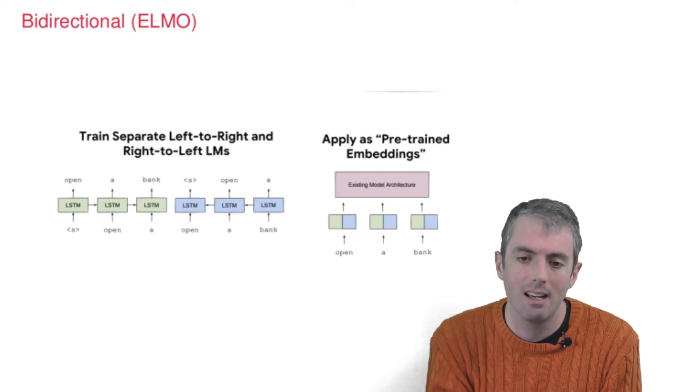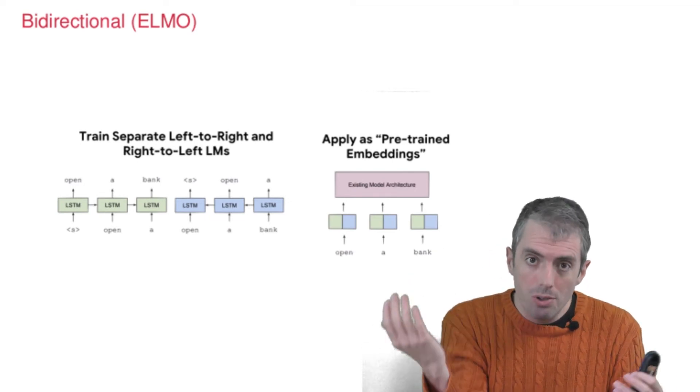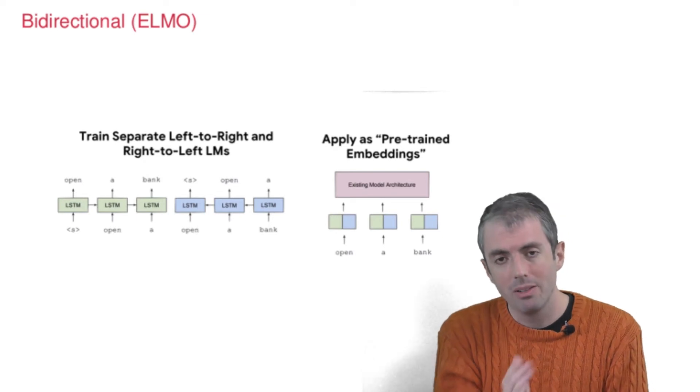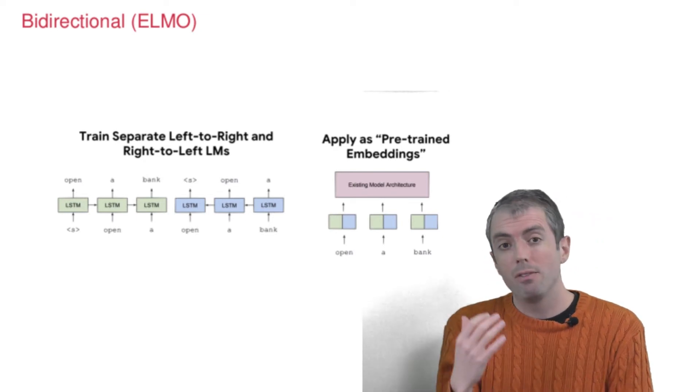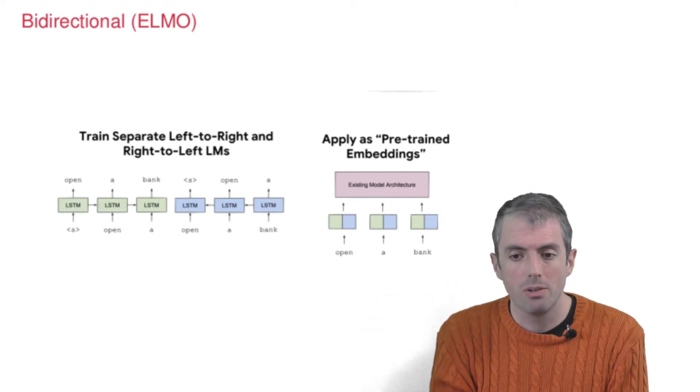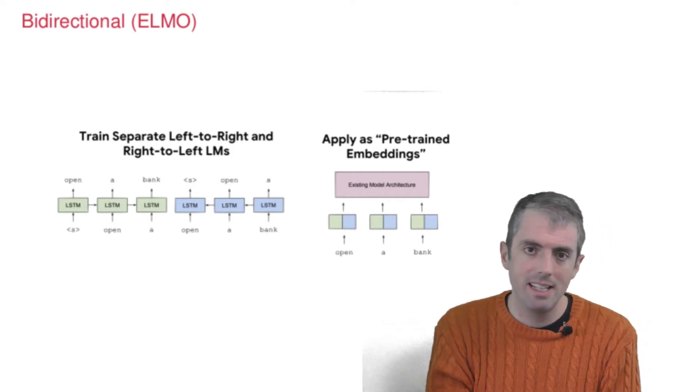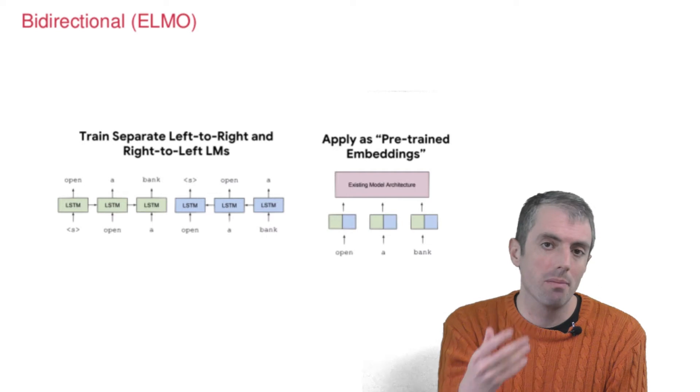And so this was one of the big insights of ELMO, that in essence, you have two language models, one going left to right and one going right to left. And each of these will have two hidden layers for every word. So you can represent 'open' by the forward LSTM hidden state and the backward LSTM hidden state, and that becomes your embedding.